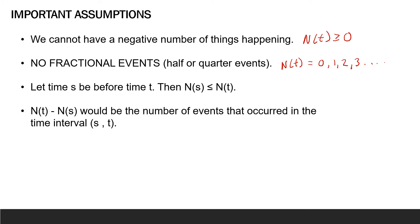Thirdly, let's think about time. Since time is sequential and continues forward, or in other words, hour four is less than hour seven, or day three is less than day seven, then let time s be before time t. Then the number of events that have occurred up until time s is less than or equal to the number of events that have occurred up to time t. In other words, as time moves forward, the number of events can't decrease. We accumulate more events as time goes on.